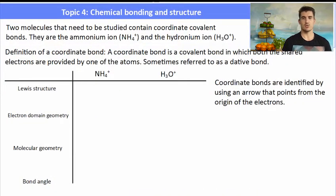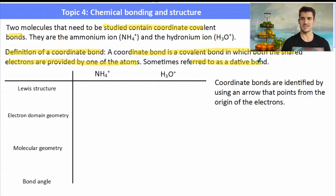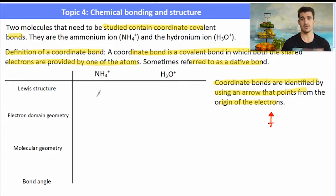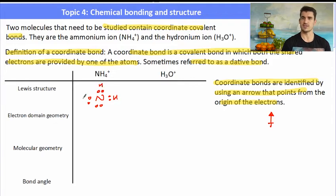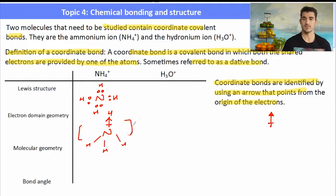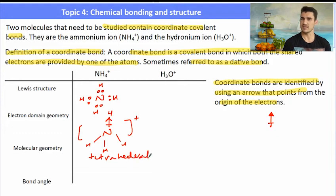Two molecules we also need to study contain what we call a coordinate covalent bond — a covalent bond in which both shared electrons are provided by one of the atoms, sometimes referred to as a dative bond. Coordinate bonds can be identified using an arrow that points from the direction of the origin of the electrons. Ammonium, NH₄⁺, is a nitrogen covalently bonded to four hydrogens; the extra hydrogen gives it a positive charge. Its electron domain geometry consists of four single covalent bonds, with the coordinate bond indicated at the top. That means its electron domain geometry is tetrahedral, and its molecular geometry, because of the extra hydrogen, is also tetrahedral, giving a bond angle of 109.5 degrees.